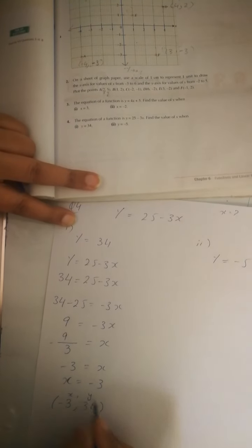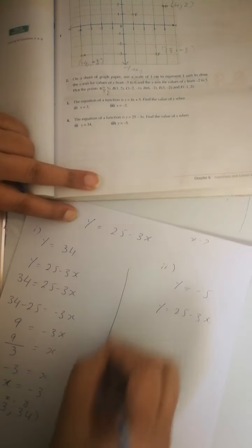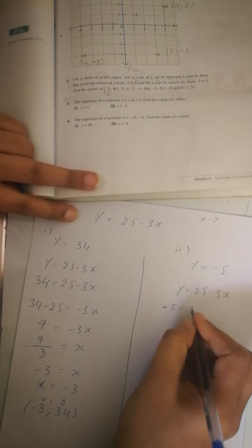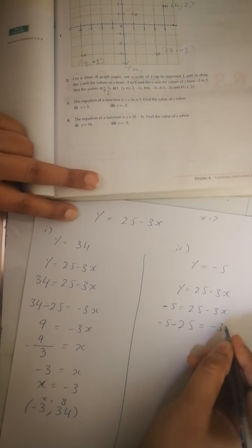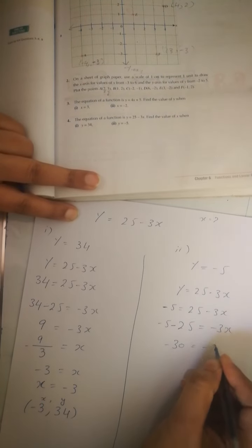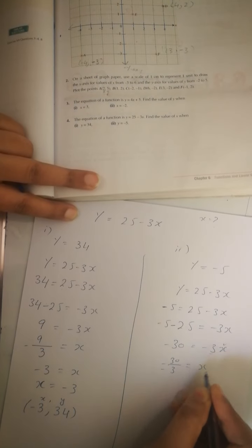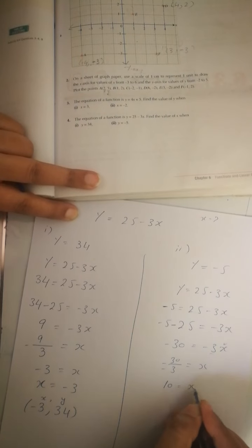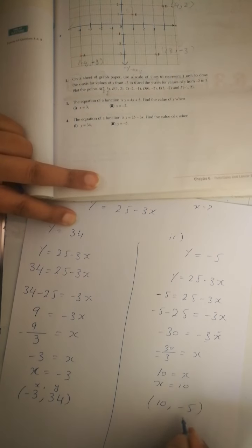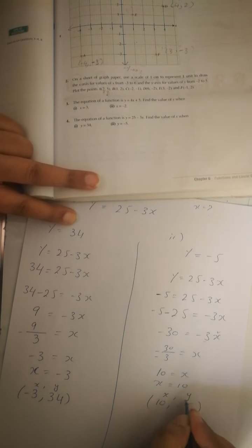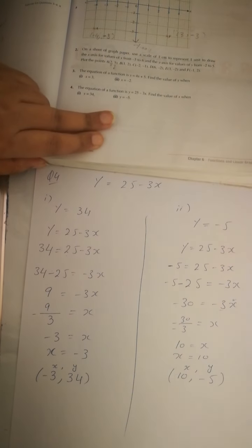For y = -5, same equation y = 25 - 3x: substitute -5 = 25 - 3x. Bring 25 to the other side: -5 - 25 = -3x, so -30 = -3x. Divide both sides by -3: the negatives cancel and x = 10. So when y = -5, x = 10. I hope you understand. Question number 5 we will do inshallah in the next video.